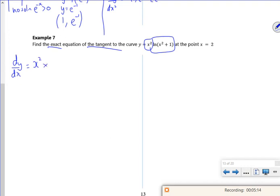Times by second bit differentiated. So remember, it's a log, it's differentiate the bracket over the bracket. So differentiate x squared into 2x, x squared plus 1.